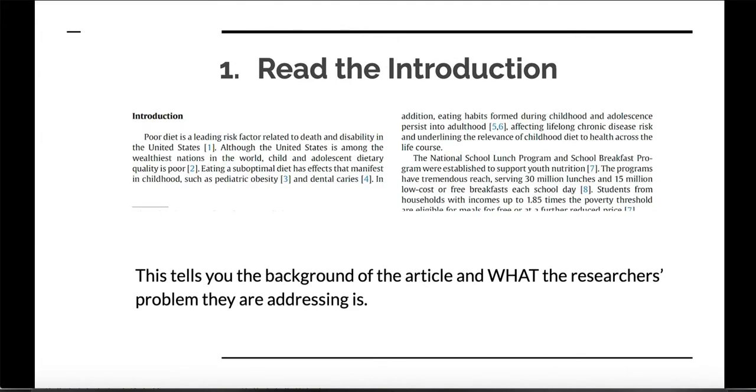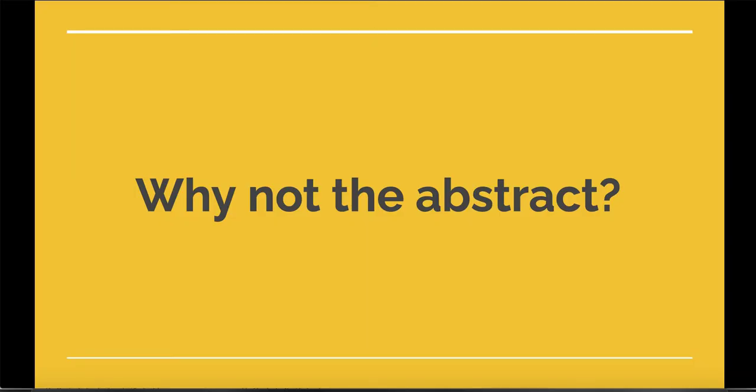When we approach an article to read it, we want to read the introduction first. This tells us the background of what an article is and what the researcher's problem is that they're addressing. But first you might say, why am I not reading the abstract first? Well, technically you've probably already read the abstract because when you're searching for articles in a library database or on the internet, you've probably already at least skimmed the abstract to figure out if it's going to be a good article to read. When reading the full article, it's actually more useful to skip the abstract and go straight into the introduction.